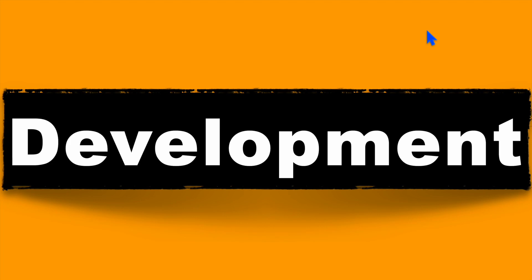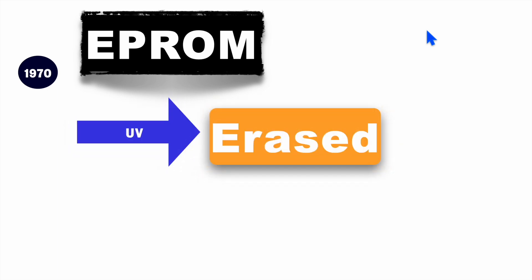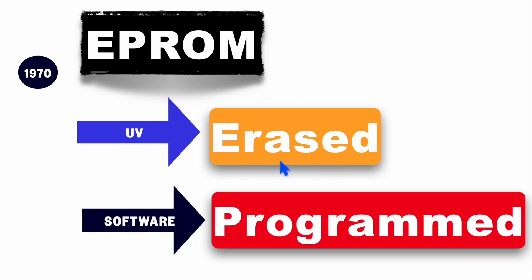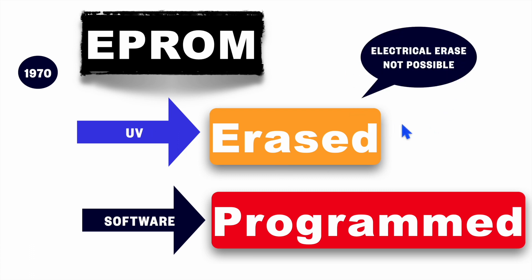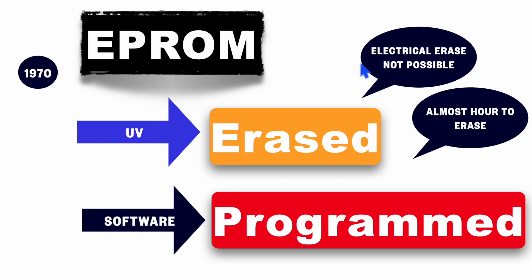Let's see its development now. In early 70s, we had erasable programmable read-only memory which could be erased with the help of UV lights and programmed with software. The main disadvantage is it cannot be electrically erased. Since it uses UV lights to erase it, it takes almost half an hour to one hour.